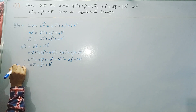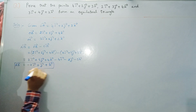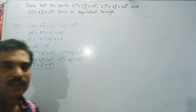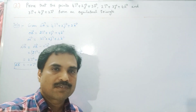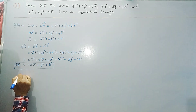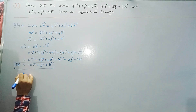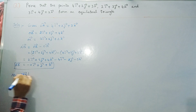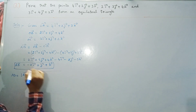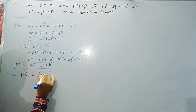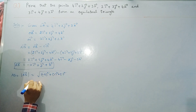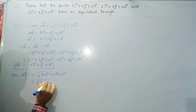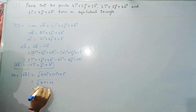Now we find the modulus of AB vector: |AB| = √((−2)² + 1² + 1²) = √(4 + 1 + 1) = √6.